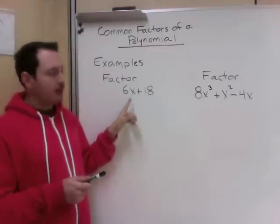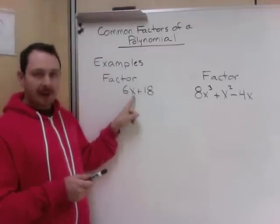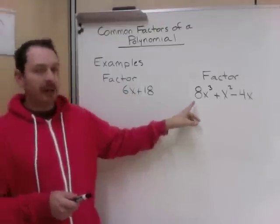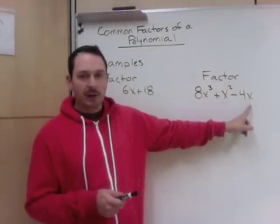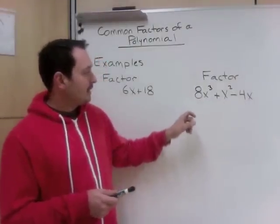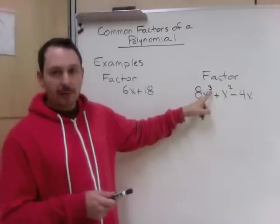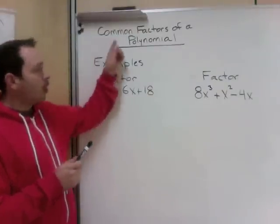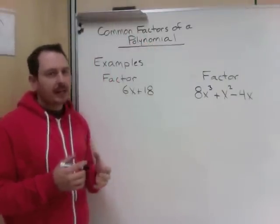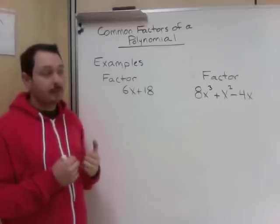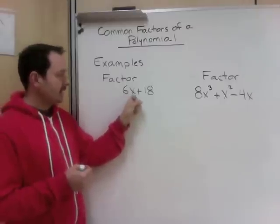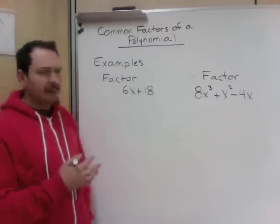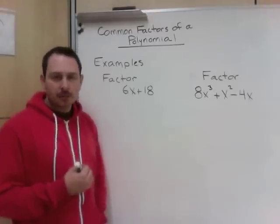So first of all, this is a polynomial because it has two terms, and our variable has a whole number, the whole number in this case is 1. In our next question, this polynomial has three terms, 8x cubed plus x squared minus 4x. And it is a polynomial because they are whole number exponents, power of 3 and squared. The other part of this title was Common Factors. So Common Factors means we're going to take out what they share in common.